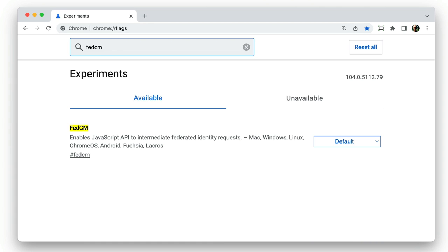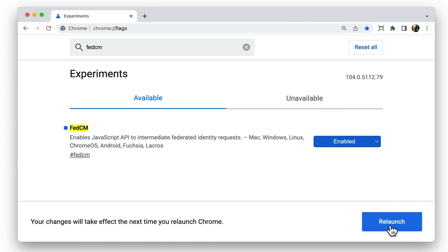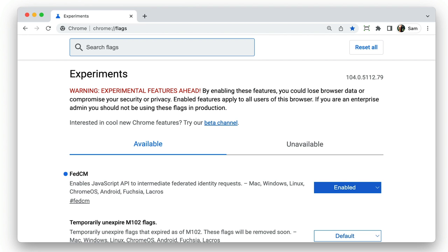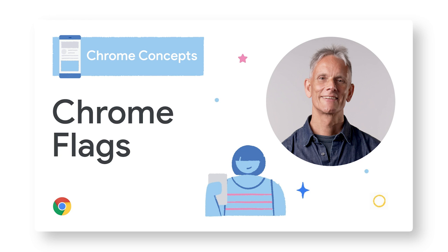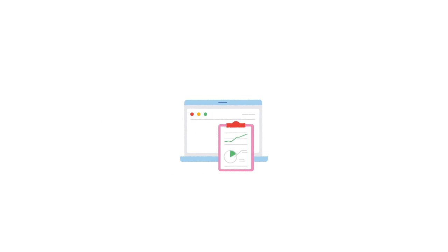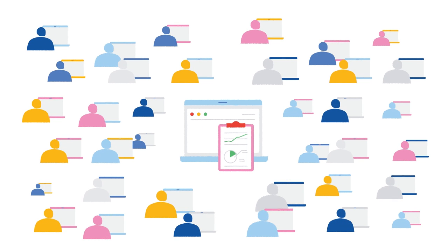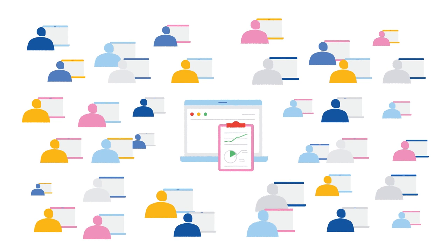You can enable new or experimental features by setting Chrome flags, but that only works for a single user. You can find out more about that from our video Chrome Flags. But if you want to do field testing with lots of real users on your site without needing them to do anything special, that's where origin trials come in handy.